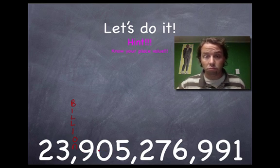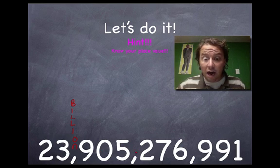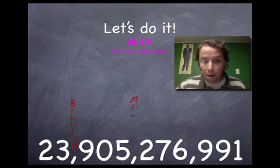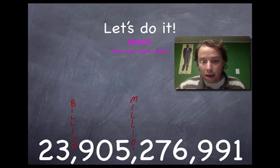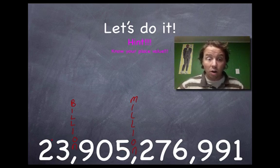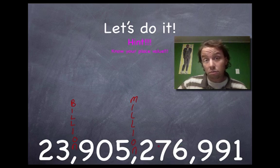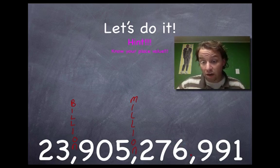So let's start over: 23 billion, 905 million. Keep going. Can you read this one before I do? Try it. 276. What comma is this? Take a guess. It's the thousands comma.